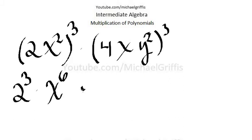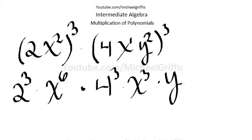Alright, times 4 to the third power times x to the third power. Remember, x has a 1 up here. And you multiply that 1 times the 3 and that gives you 3 times y squared. But it's raised to the third power, so that's 2 times 3 is 6.